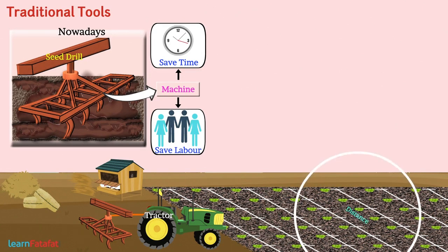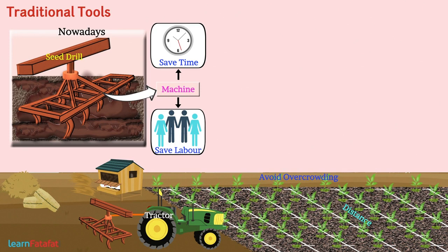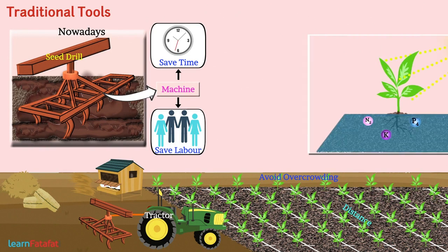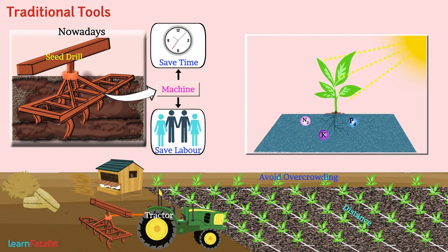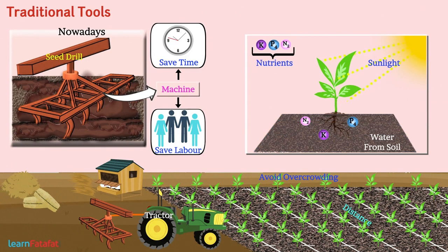Keeping distance between seeds helps to avoid overcrowding of plants, which in turn allows plants to get sufficient sunlight, nutrients, and water from the soil. I hope you understood this step of crop production very well. Thanks for watching this video.